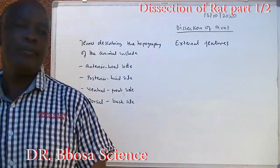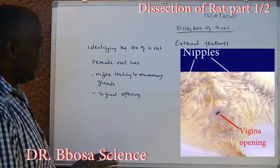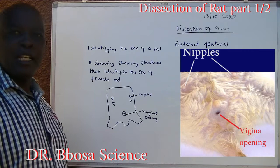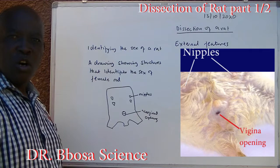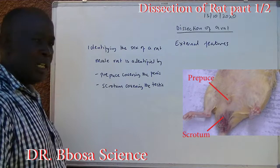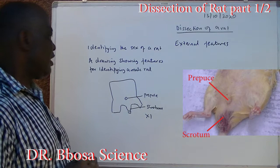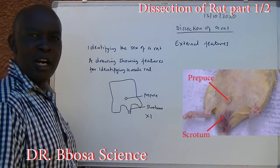Identifying the sex of a rat: a female rat has nipples leading to mammary glands and a vaginal opening. For a drawing showing structures that identify the sex of a female rat, we label nipples and vaginal opening. A male rat is identified by a prepuce covering the penis and a scrotum covering the testes. For a drawing of male identifying features, we label prepuce covering the penis and scrotum covering the testes.